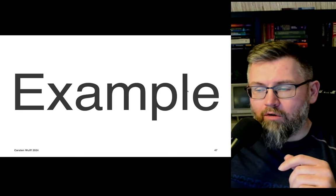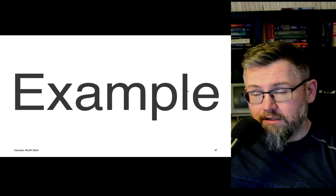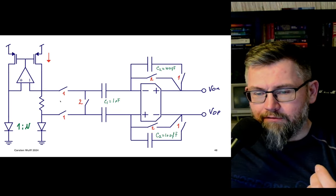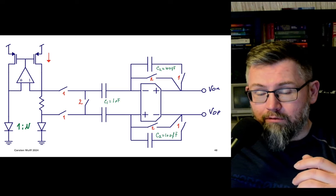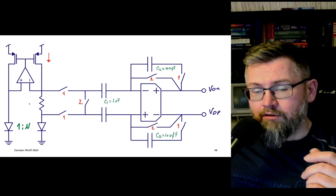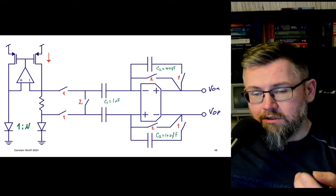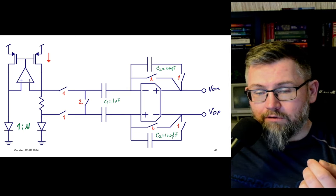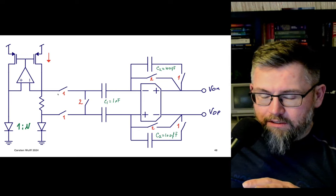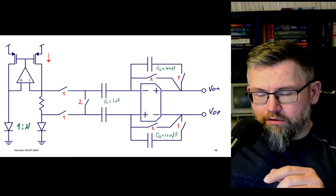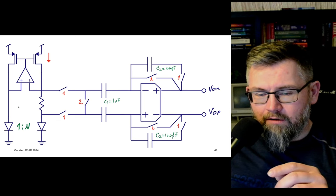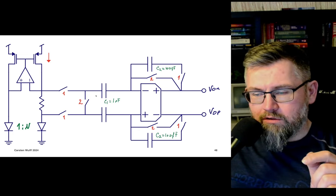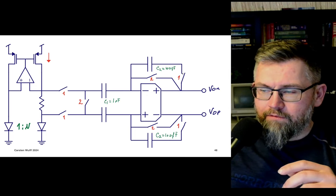An example use of a switch capacitor circuit relates back to the temperature sensor. We have a delta-VBE generator — the circuit has a voltage across the resistor given by the difference in diode voltages, which equals kT/Q times the logarithm of the size difference. In this circuit, we sample that differential voltage across C1 capacitors during phase 1.